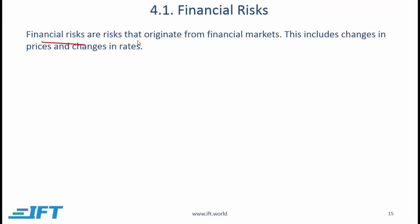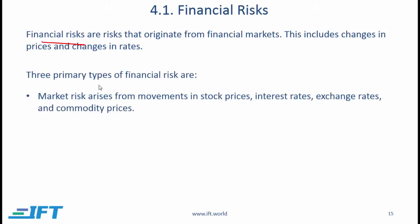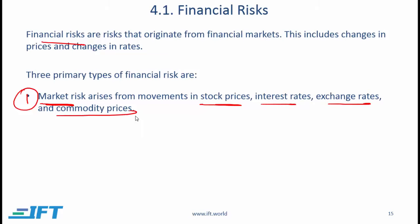Financial risks are risks that originate from financial markets, including changes in prices and changes in rates. There are three primary types of financial risk. Number one is market risk, which arises from movements in stock prices, interest rates, exchange rates, and commodity prices.